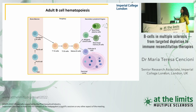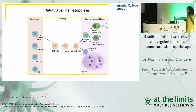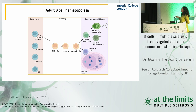When transitional B cells become mature B cells, they have two opportunities to differentiate: into follicular B cells that generate the germinal center, or into marginal zone B cells, which differentiate into short-lived memory B cells and short-lived plasma cells.